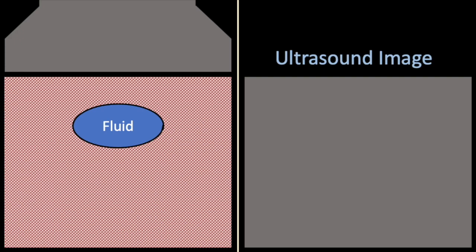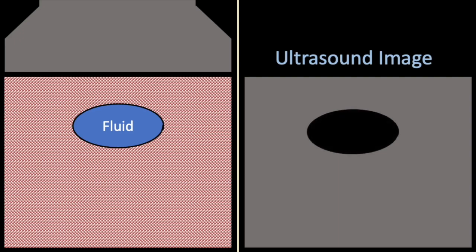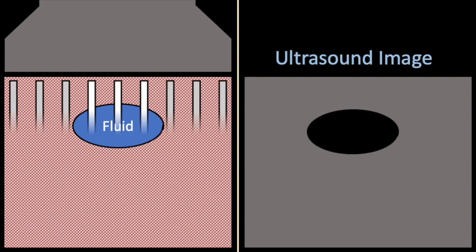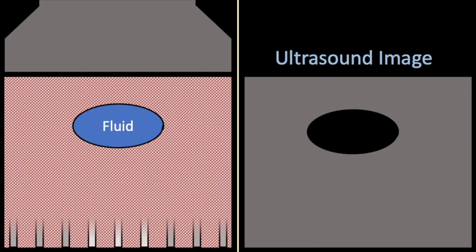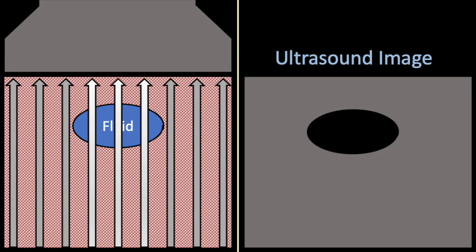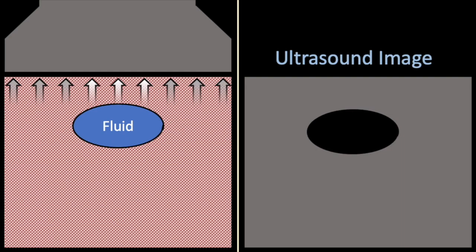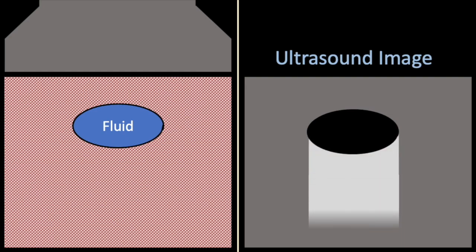As the ultrasound waves come from the probe, no attenuation of the signal happens within a fluid collection. It is anechoic — it doesn't produce any echoes and therefore appears black by ultrasound. Attenuation happens in the surrounding tissue as the beam goes deeper, but less so in the fluid collection, so the beams that return through the fluid collection have less attenuation and therefore appear as if there's posterior acoustic enhancement.